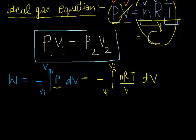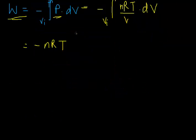As I have told you earlier, this nRT thing is a constant. So we can take it out of the integral. So this becomes minus nRT integral V initial to V final dV upon V.